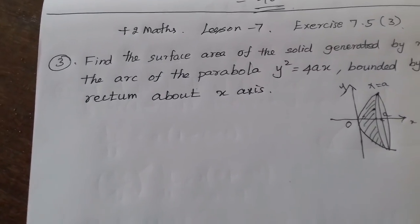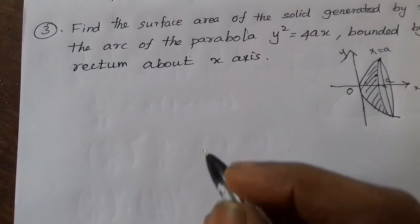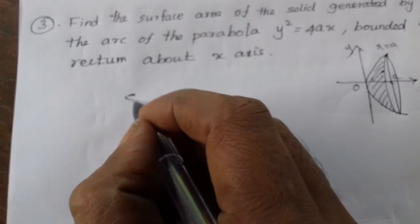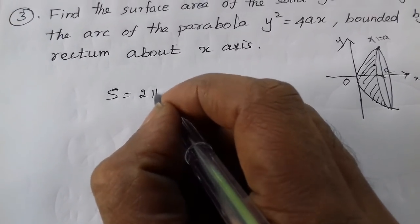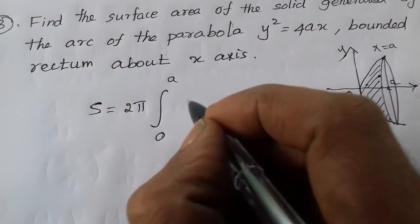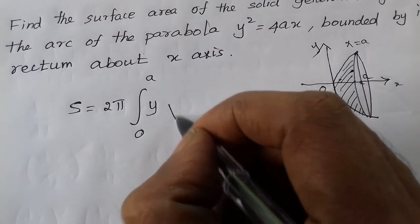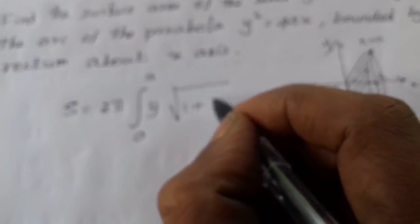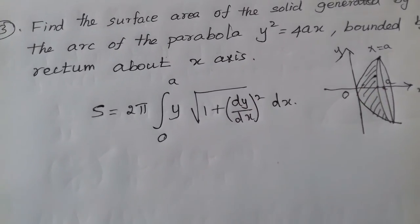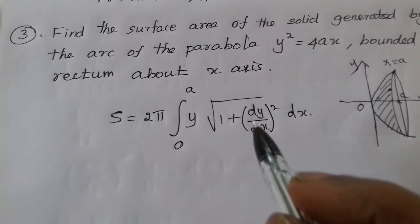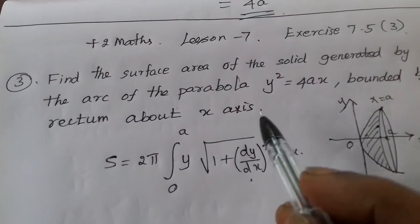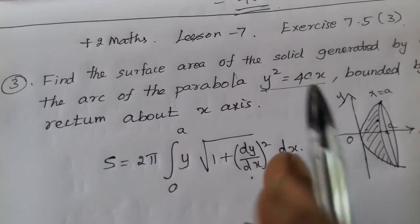The surface area formula is: y into root of [1 + (dy/dx)²] into dx. This is the formula we will apply. For y² = 4ax, right-side open parabola, we proceed with this formula.